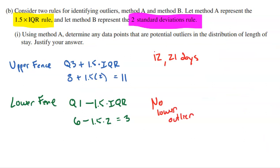So this identifies two values as being outliers. Those would be the two people, the one that stayed 12 days and the one that stayed 21 days.